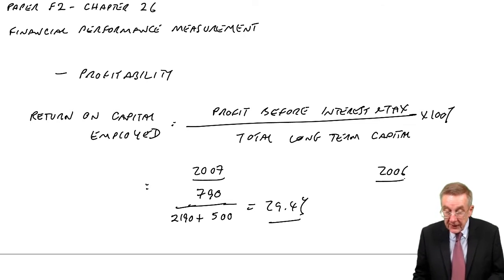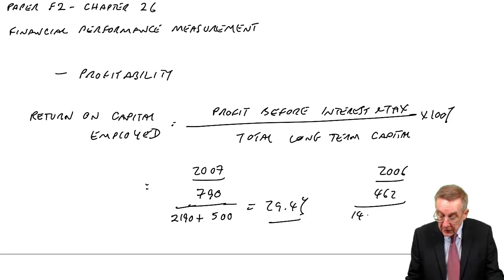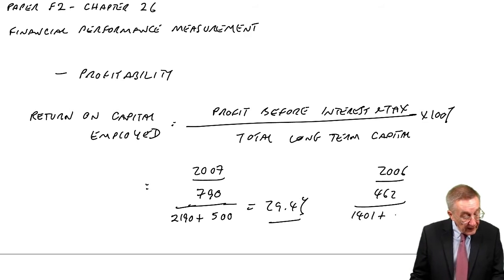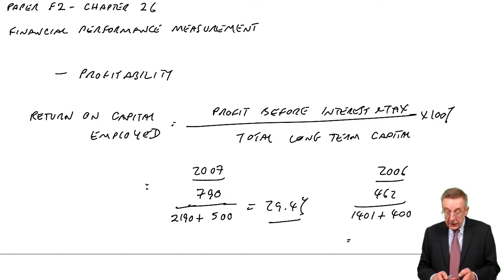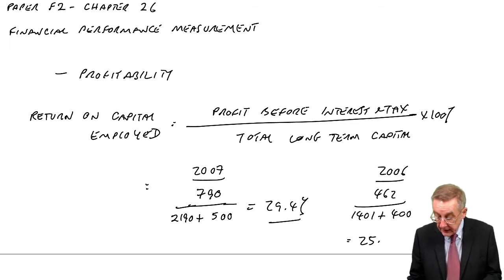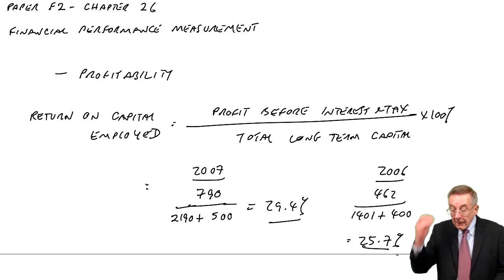Whereas in 2006, the profit from operations is 462. The total long-term finance, share capital 1401, non-current liabilities is 400. So in percentage terms, 25.7%.